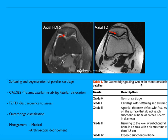One of the common classification systems used is the Outerbridge classification. Grade 0 is normal cartilage, followed by grade 1, grade 2, grade 3, and grade 4. Let us see a few illustrations.